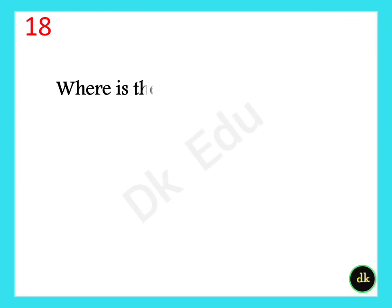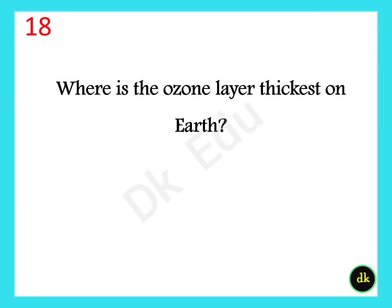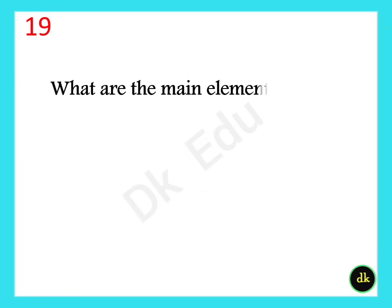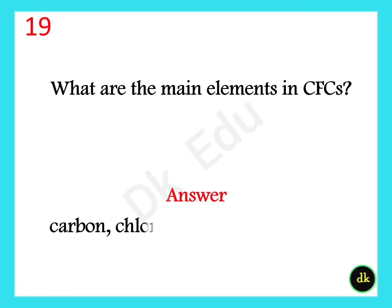Where is the ozone layer thickest on Earth? At the poles. What are the main elements in CFCs? Carbon, Chlorine, and Fluorine atoms.